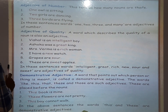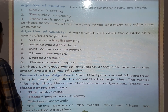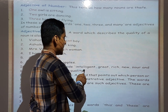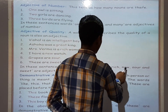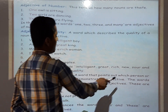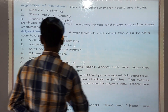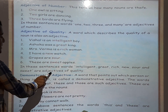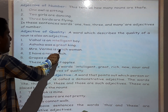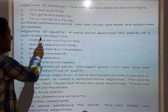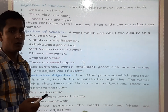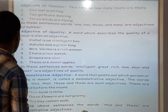Fourth, fifth, sixth example aap log dekh rahe hain. Now, in these sentences, words intelligent, great, rich, new — jo fourth number question mein diya hai — new, uske baad sour and sweet are adjectives of quality. Yeh jitne bhi words hain yeh sab kya hain? Adjective of Quality hain, kyonki yeh kisi noun ke quality ko bata rahe hain.